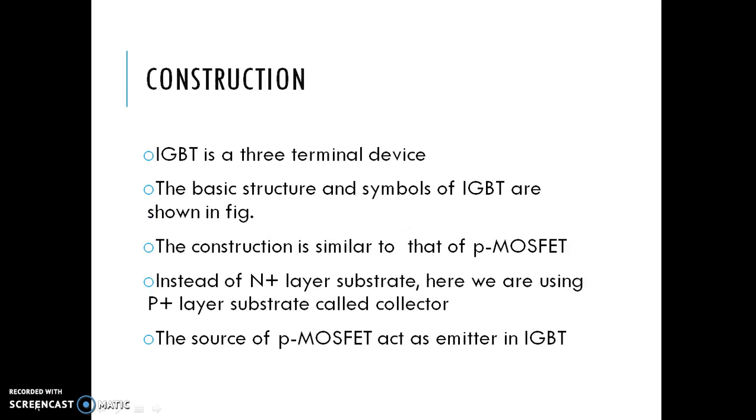Let's see the construction of IGBT. IGBT is a three terminal device. The basic structure and the symbol of IGBT can be seen in next slides. The construction is similar to that of P-MOSFET. Instead of N+ layer substrate, here we are using P+ layer substrate called Collector. The source of P-MOSFET acts as an emitter in IGBT.